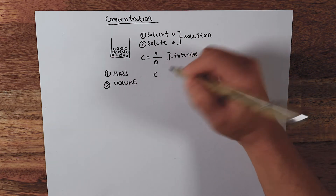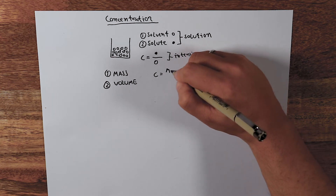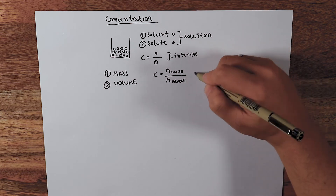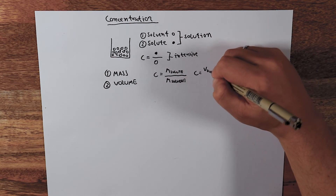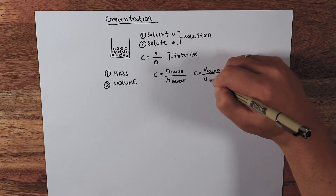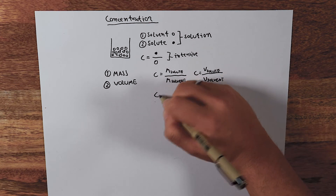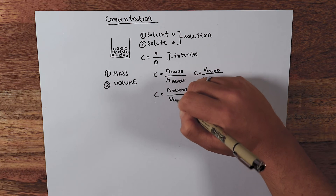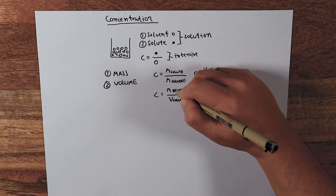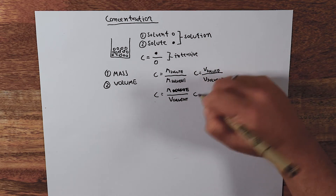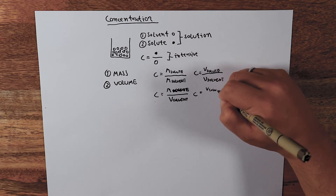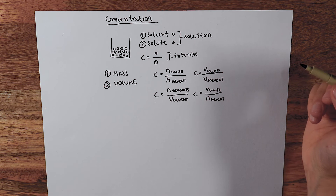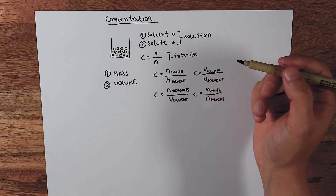In reality, we express concentration as ratios of these macroscopic properties. There are four common ways to do this: the mass of the solute as a ratio to the mass of the solvent; the volume of the solute against the volume of the solvent; the mass of the solute as a ratio to the volume of the solvent; and the volume of the solute versus the mass of the solvent.